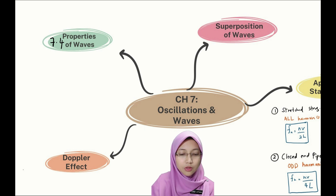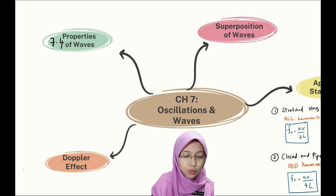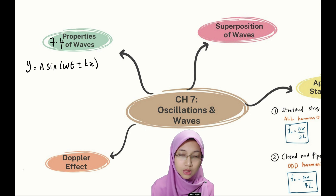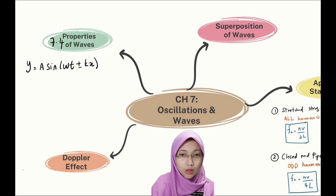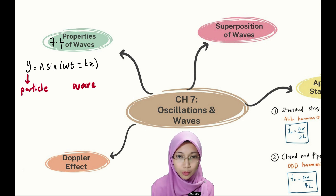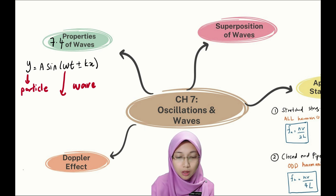For 7.4, we have properties of waves. The wave equation is y = a sin(ωt ± kx). The pattern of this equation is similar to simple harmonic motion. When we talk about waves, we are actually talking about two things: the particle and the wave propagating. As the wave propagates, the particle is vibrating, so we are talking about two movements at the same time.